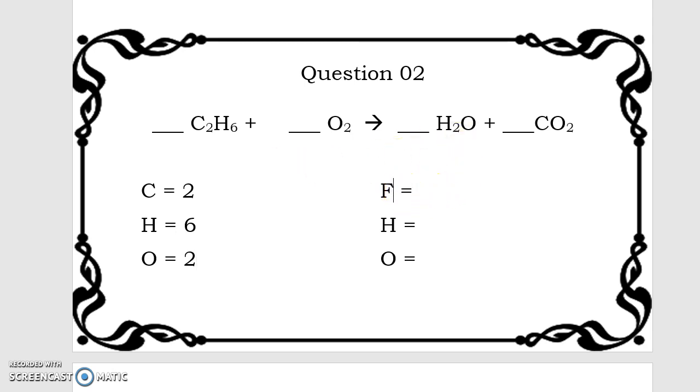On my product side, I have one carbon atom because there's no subscript here, so this is just a carbon of one. I have two hydrogens. And I have three oxygens, and this one's a little tricky because I have one oxygen here and I have two oxygens over here, so I have to remember to add these up any time I'm going to make changes.